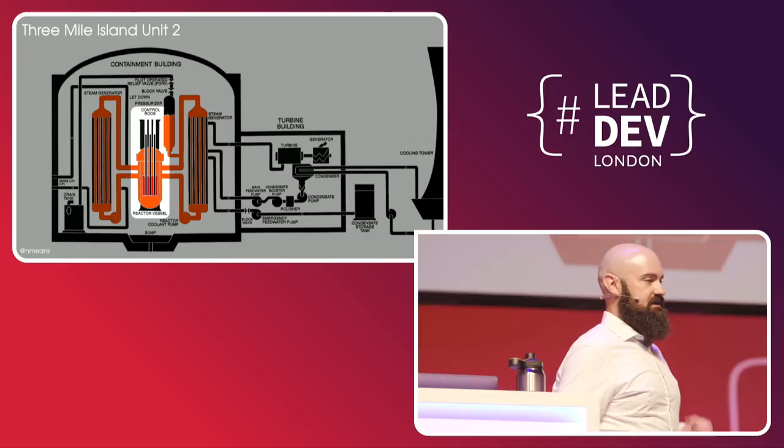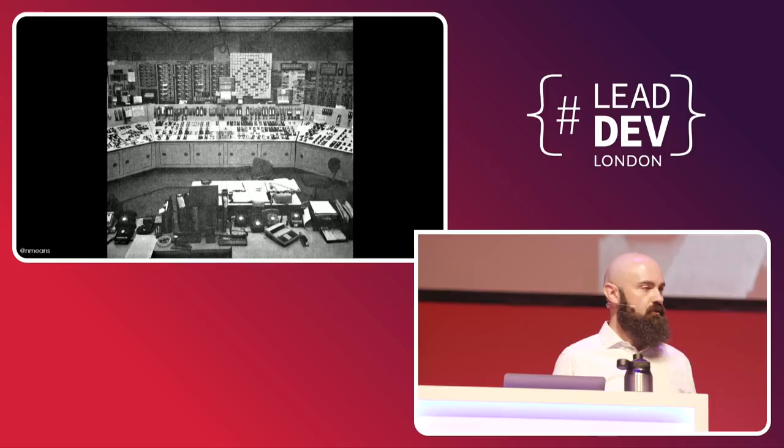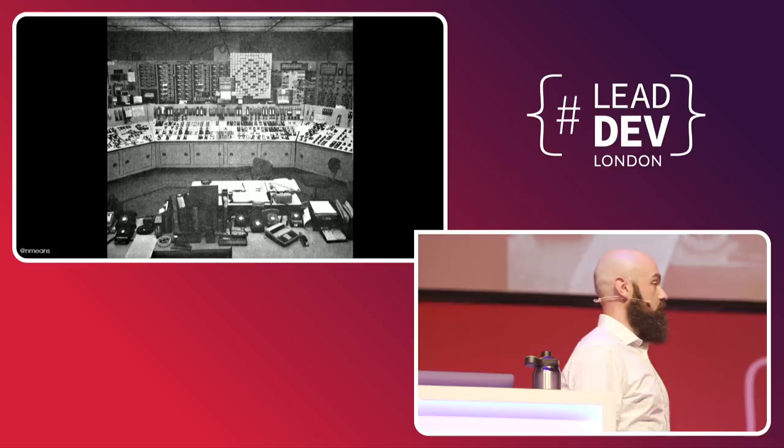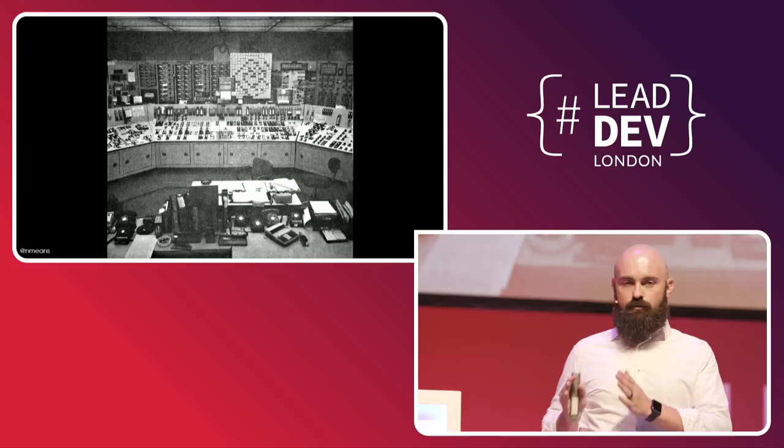A few seconds later, back in the control room, a light on the console turns from red to green to indicate that the pilot-operated relief valve has been signaled to close. At this point, after the scram, the reactor is comfortable, confident that everything is in control — and so are the operators. This is a situation that, while it doesn't occur every day, is one that they prepare for and have procedures for. They're very confident that the system is behaving exactly as it should be. That confidence lasts for about two minutes.